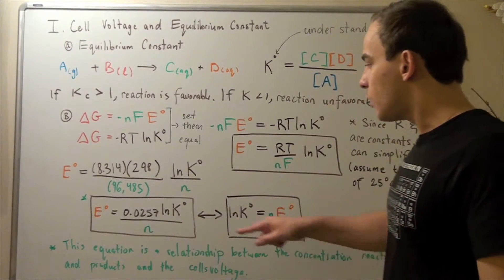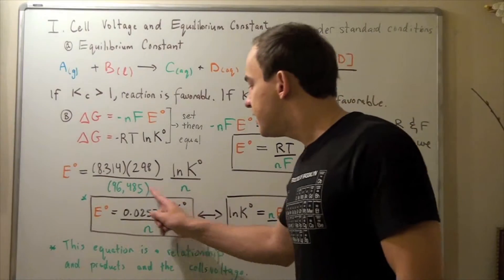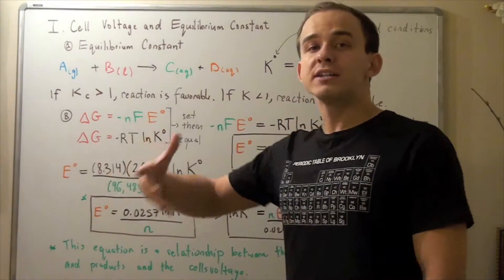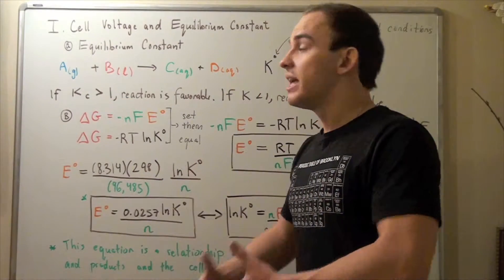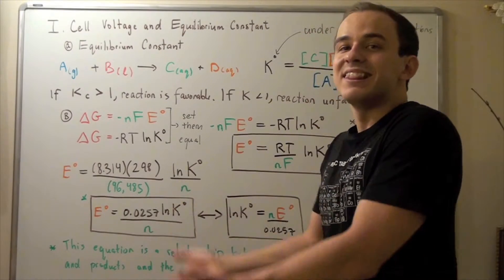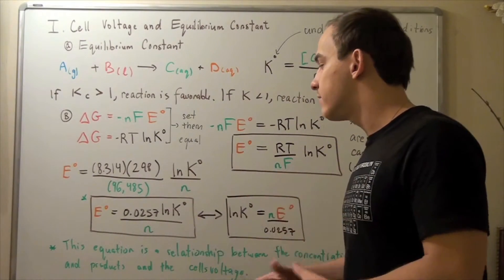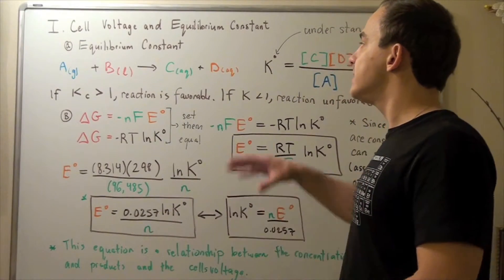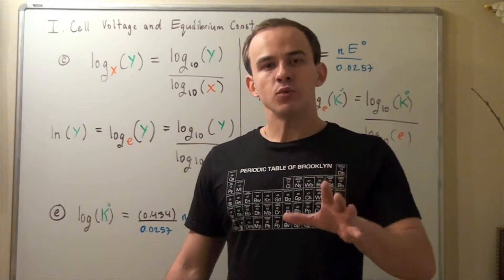Notice an important connection: when K is greater than 1, the natural log of K is positive, which makes E positive. A positive cell voltage means the reaction is product-favored and spontaneous — consistent with K > 1 indicating a favorable reaction. Conversely, if K is less than 1 (say, 0.9), the natural log of a number less than 1 is negative, so E becomes negative. A negative E means the reaction is reactant-favored and not spontaneous, consistent with K < 1 being unfavorable.